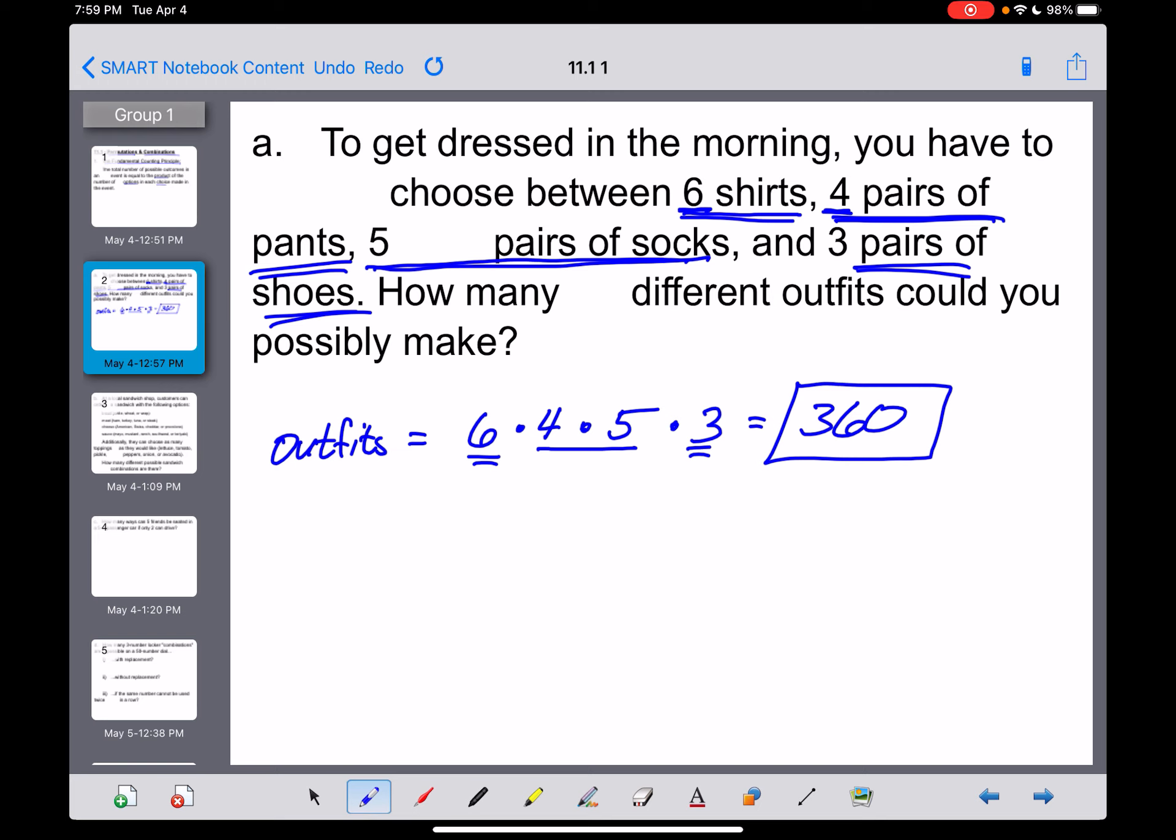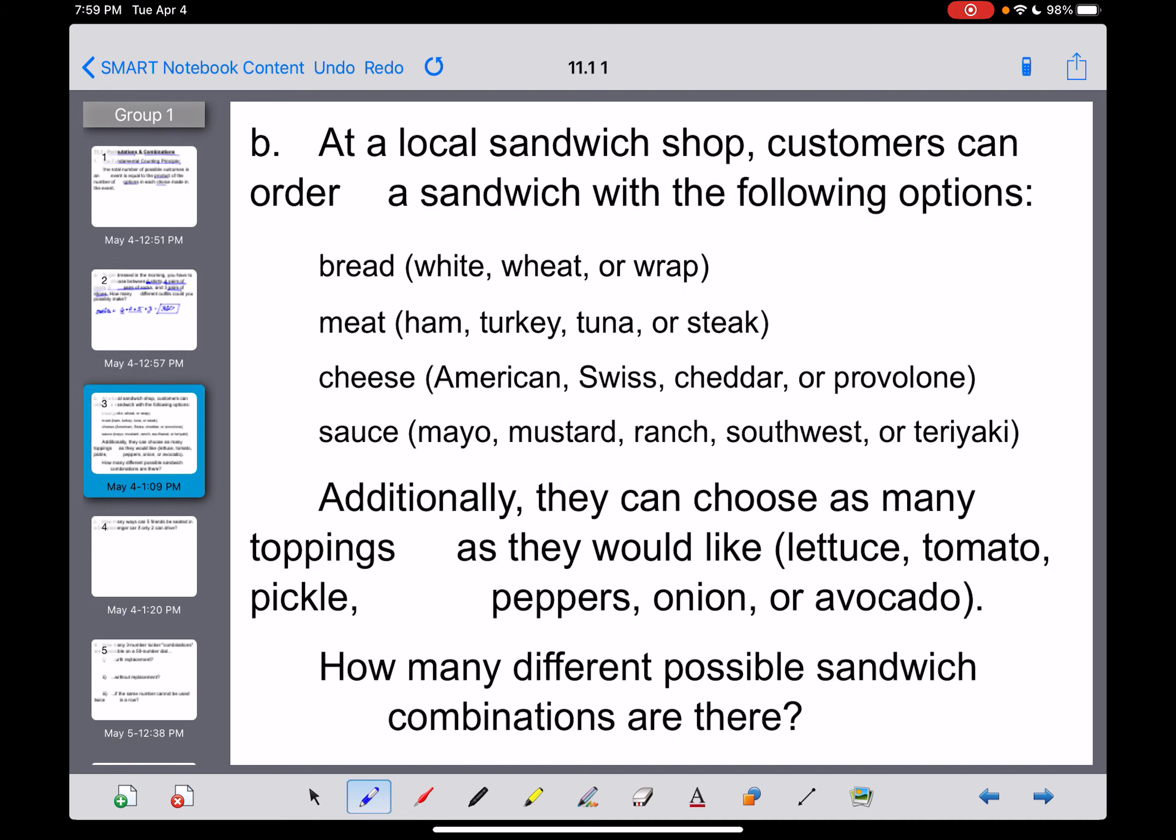So really, all we're doing is multiplying all of this stuff together. Not a real hard concept. Okay, so this next one right here, guys, let's talk about another case here where you've got to make some decisions in your life. You go to a sandwich shop, and I wanted to say Subway, but that'd be copyright infringement, and I didn't pay the royalties for that. So anyway, you're going to go to your local sandwich shop, and you're going to order a sandwich, and you've got a whole bunch of options.